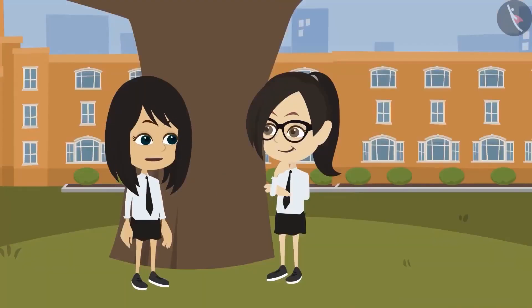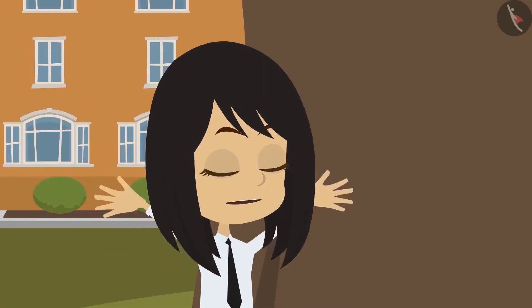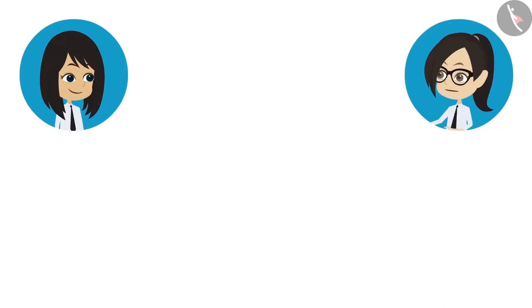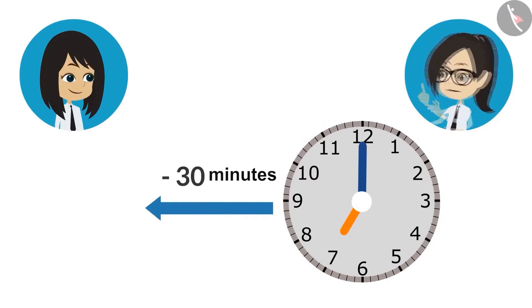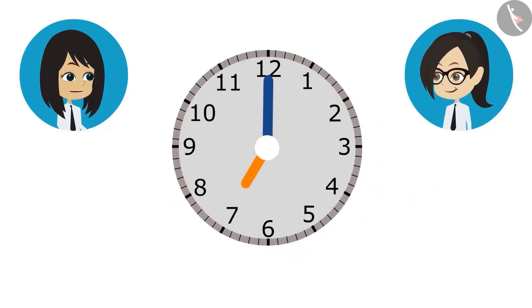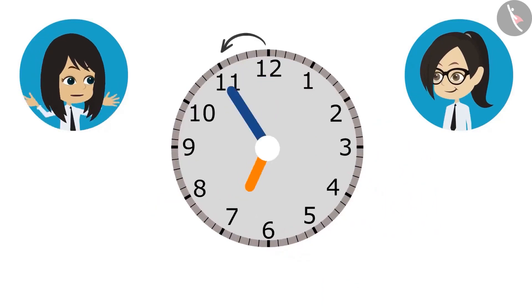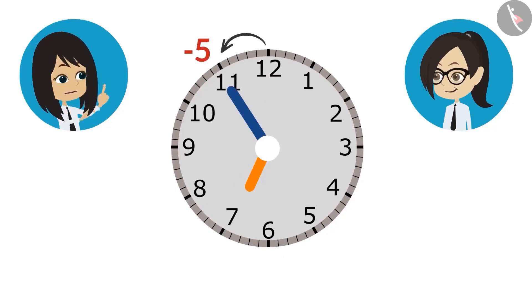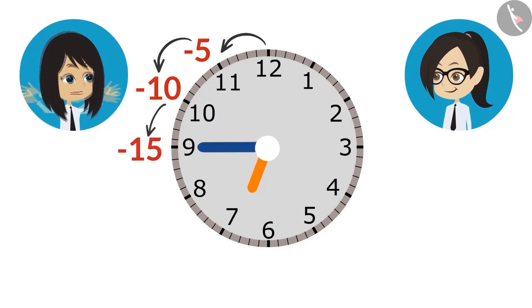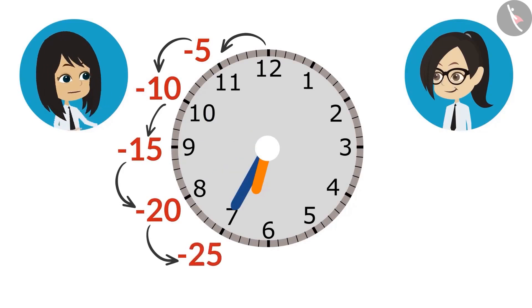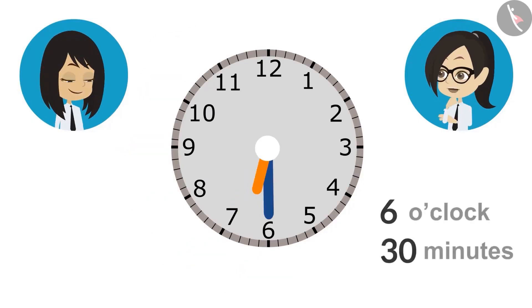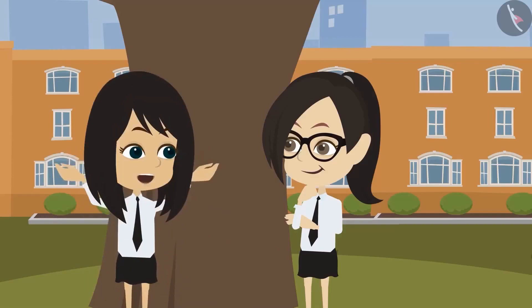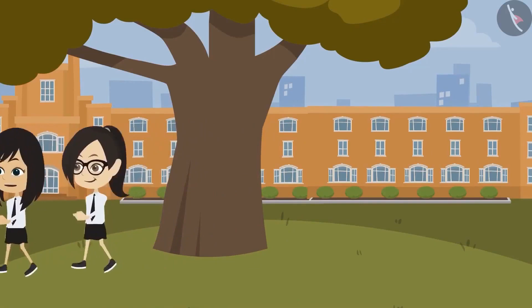To come to the amusement park tomorrow, we have to reach school at 7 o'clock in the morning. If we take 30 minutes from home to reach school, what time do we have to leave from home? First we will draw 7 o'clock on the clock. Then we will reduce 30 minutes. From 12 to 11 reduces 5 minutes, to 10 is 10 minutes, 15 at 9, 20 at 8, 25 at 7, and 30 minutes when it reaches 6. This means tomorrow we have to leave home at 30 minutes past 6 o'clock without fail.